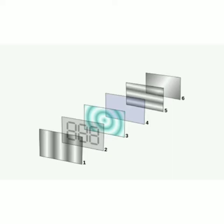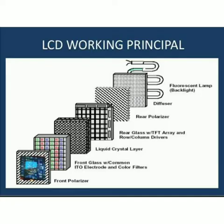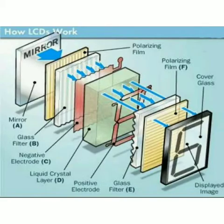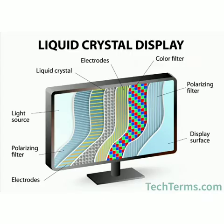Working of LCD: A liquid crystal display works on the principle of blocking of light. It does not emit light and requires a backlight. When an electrical signal is given to the liquid crystal, its orientation changes, and based on the orientation, polarized light will pass through it — blocking of light is done based on the electric signal applied to the liquid crystal.